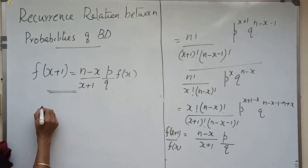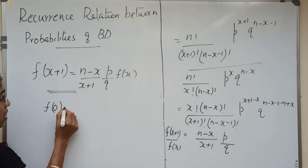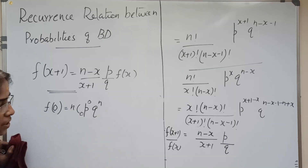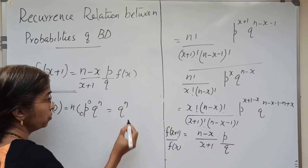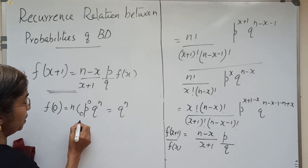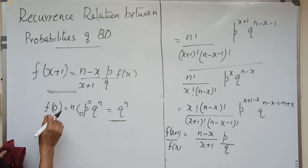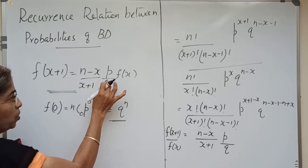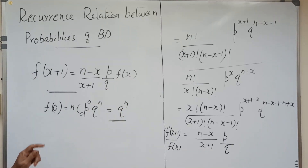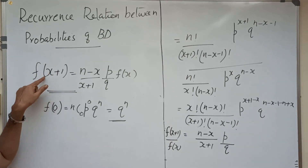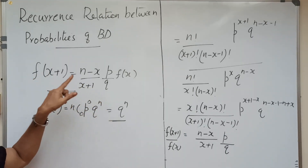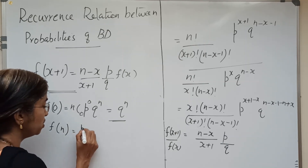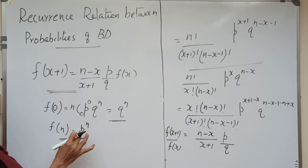From f of x, when x equals 0, we get f of 0 equals n-C-0, p raised to 0, q raised to n, which equals q raised to n. The remaining probabilities can be obtained using this recurrence relation. When x equals 0, we get f of 1 as (n minus 0) by 1, times p by q, times f of 0. When x equals n minus 1, we get f of n equals n-C-n which is 1, times p raised to n, q raised to 0 — that is, f of n equals p raised to n.